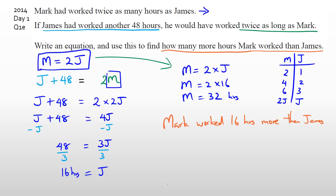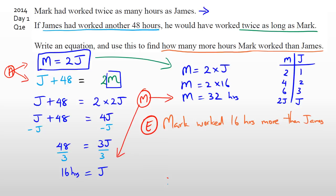It's really important that you write that final statement, because that's what the question is actually asking you. Writing that statement is going to get you an excellence. Achieved is getting either one of those equations. A merit is solving and finding m or j, or a correct conclusion with one equation. So even if you don't know the answer, guess and check and write the answer — you might get an achieved, and with the right conclusion, maybe even a merit.